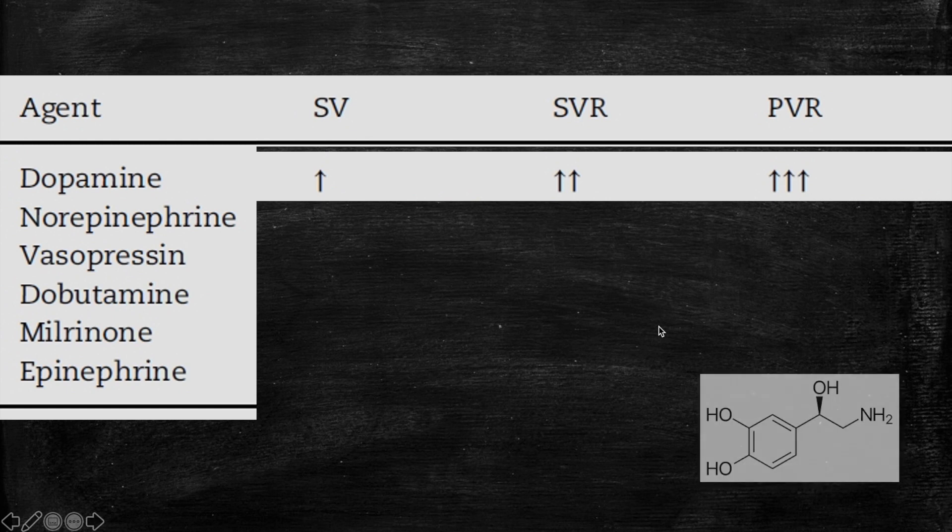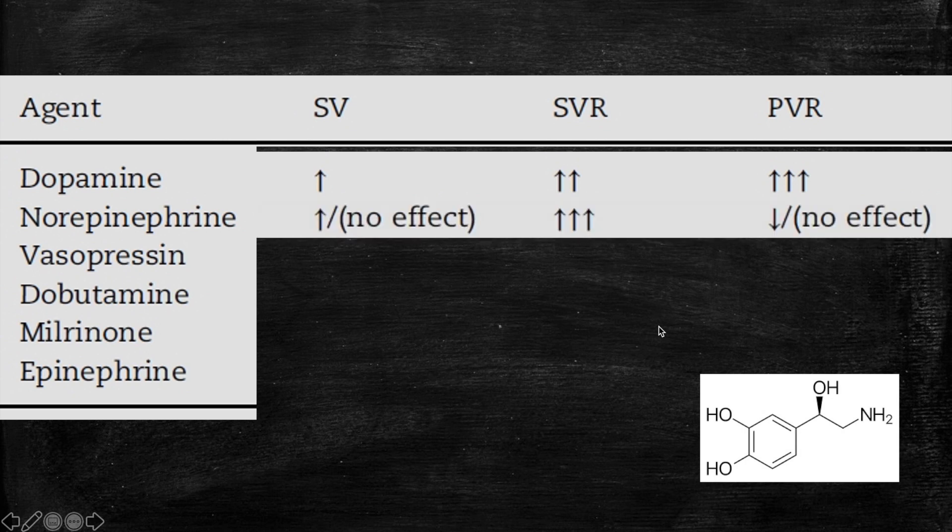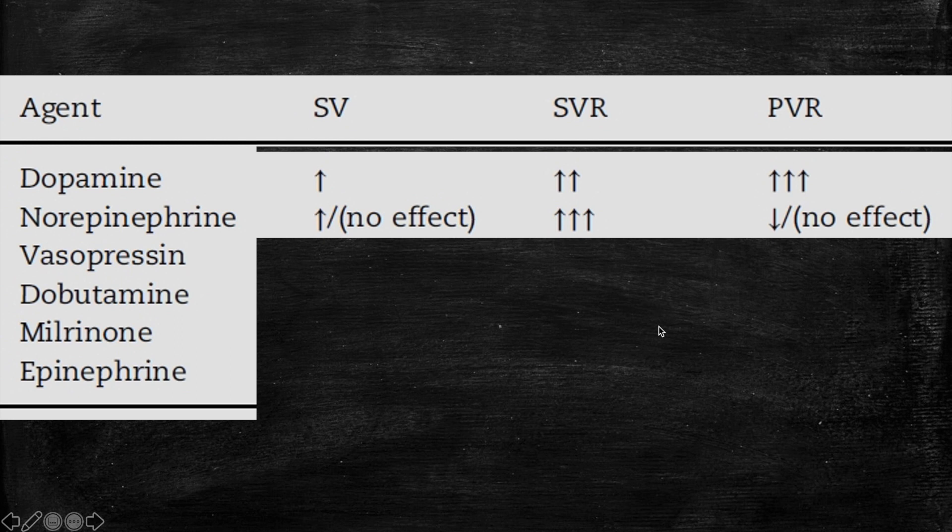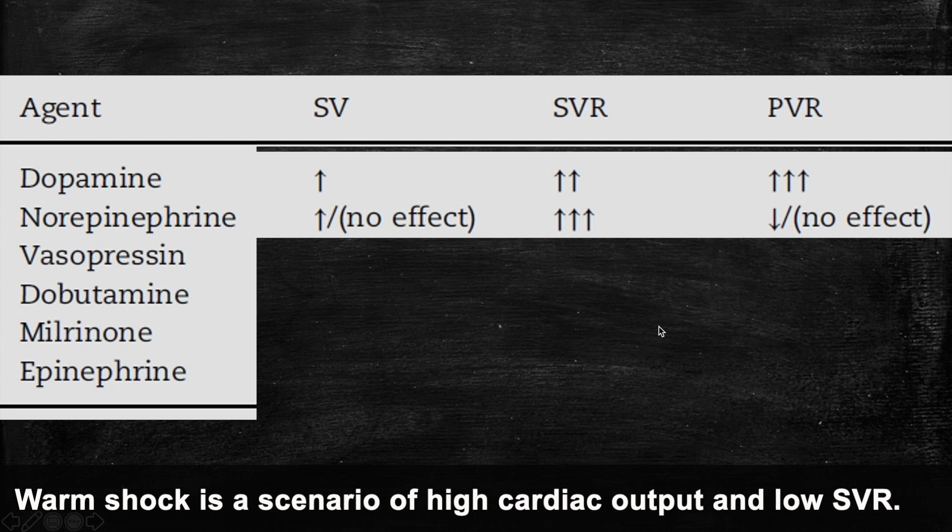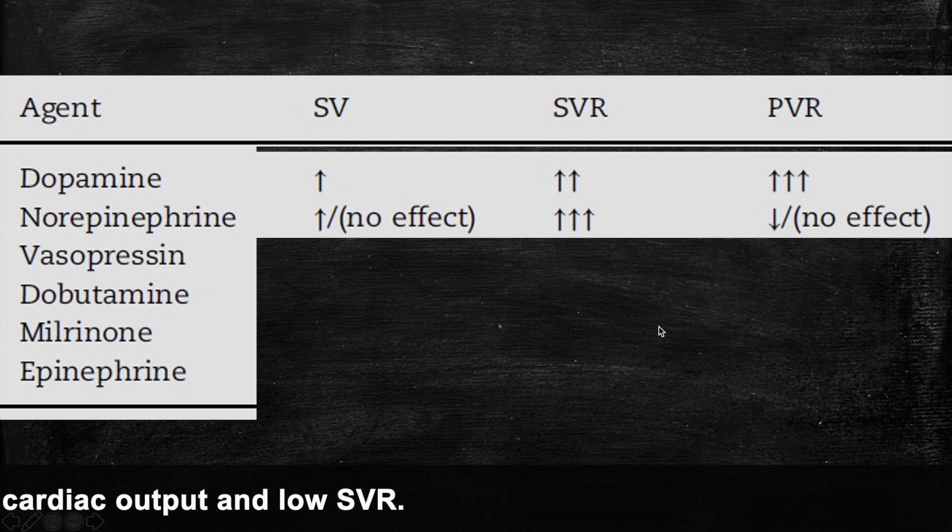Next agent is norepinephrine. Norepinephrine also has some inotropic effect and it will increase the stroke volume a little bit. However, the main effect of the norepinephrine is increasing the systemic vascular resistance. It doesn't have that much of an effect on the pulmonary vascular resistance. So the best case or the scenario to use the norepinephrine is in a warm shock where you have really decreased systemic vascular resistance and hence the hypotension. Just use norepinephrine and it will increase your SVR and hopefully it will fix the blood pressure.